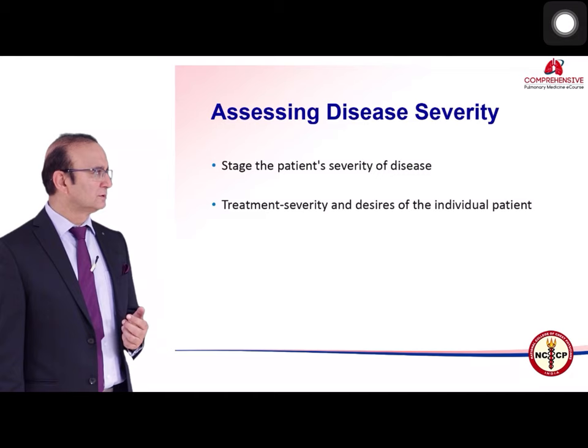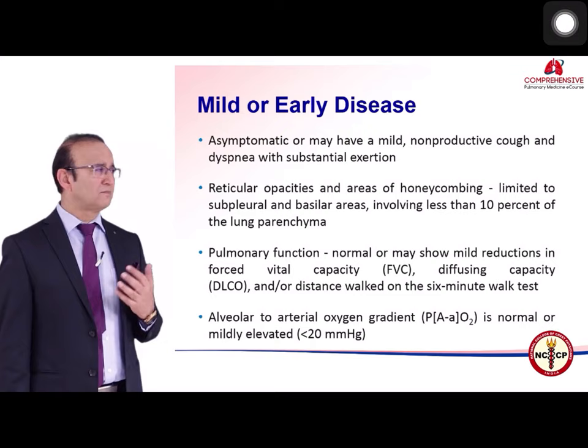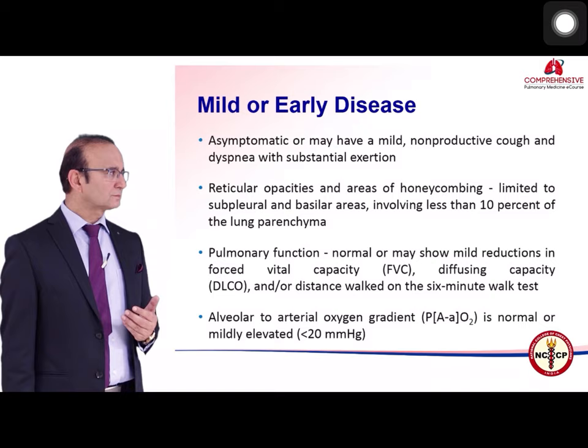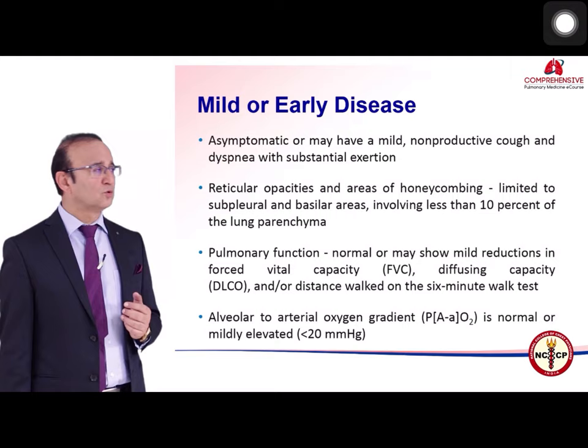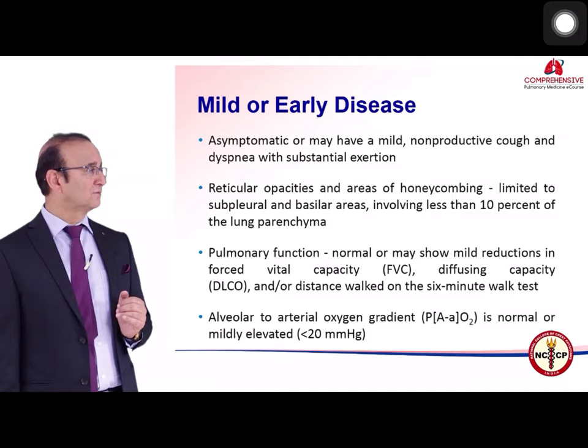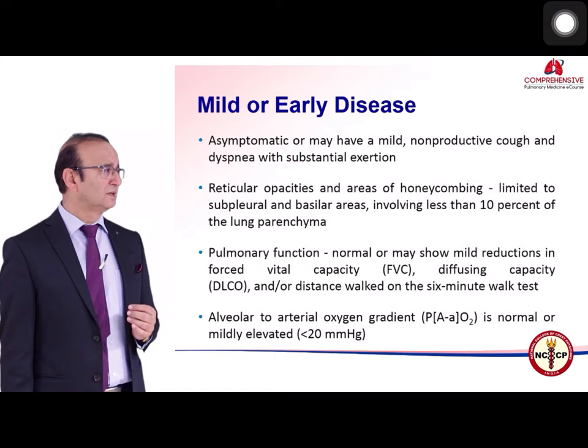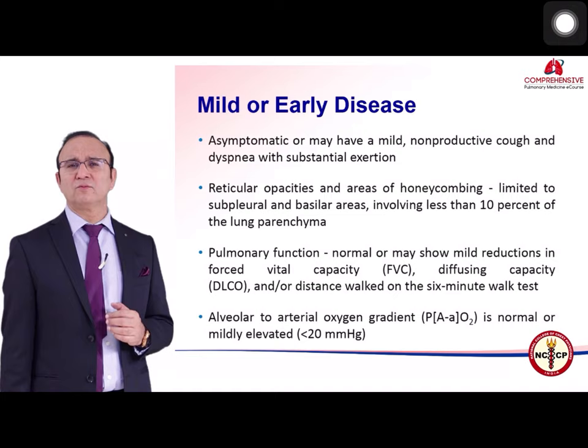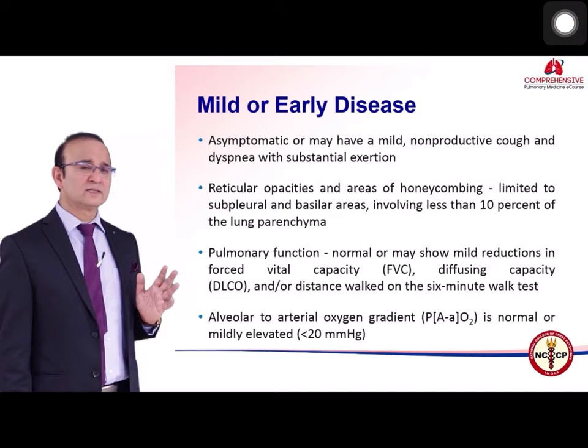In mild disease, patients are often asymptomatic or have mild symptoms — nonproductive cough and dyspnea with substantial exertion. Radiographic changes of reticular opacities and honeycombing are limited to subpleural and basilar areas, involving less than 10 percent of the parenchyma. PFT shows mild reduction in forced vital capacity and diffusing capacity, and mild reduction in 6-minute walk distance.